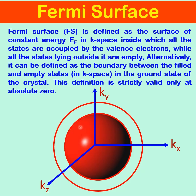Let us take this as the Fermi surface. The solid sphere shown here is called the Fermi surface — specifically, the surface of this solid sphere. Up to this region, all the states within these K values are filled, whether you take the x-axis, y-axis, or z-axis; all states up to this surface are filled.